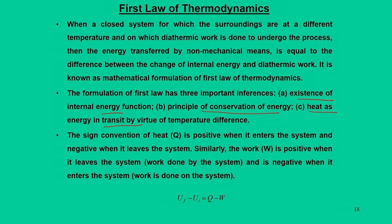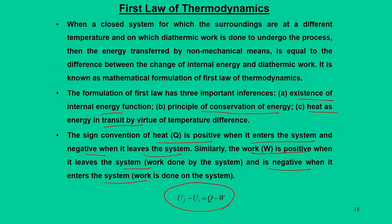From the first law, the change in internal energy dU is the difference between heat and work transfer: dU = dQ − dW. The sign convention is: heat is positive when it enters the system and negative when it leaves. Work is positive when it leaves the system (work done by the system) and negative when it enters the system.